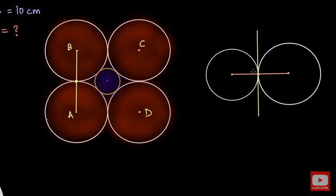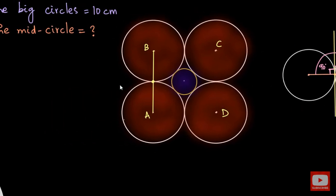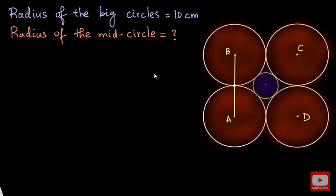This is a radius and this is a tangent, so this angle must be 90 degrees. In the same way, this is a radius and this is a tangent, so this angle must also be 90 degrees. So we have 90 plus 90, giving a 180-degree angle. Because of that, we can say that the line joining the centers of two touching circles with their point of contact is always a straight line. So we have proved that AB is a straight line.